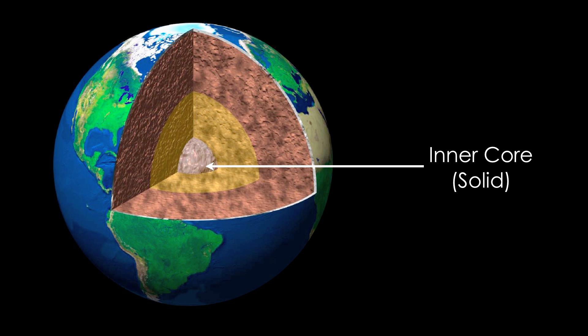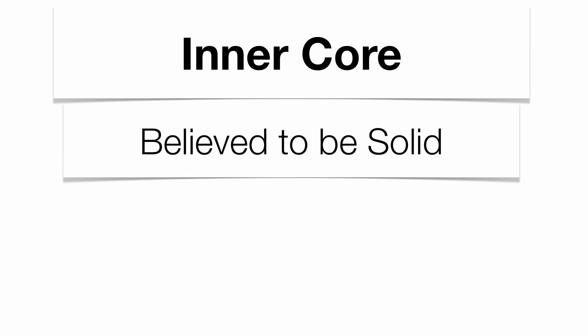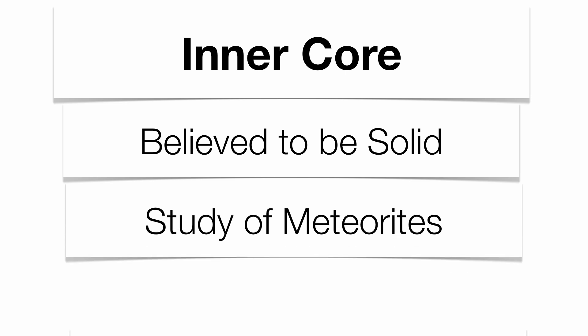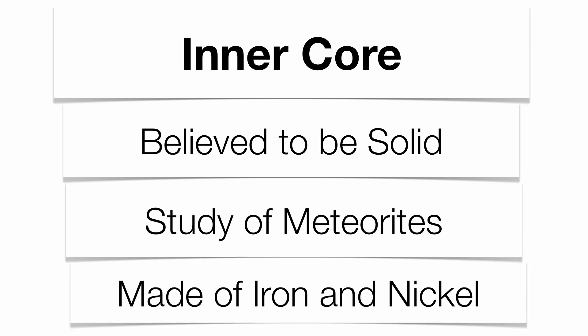Going a little bit deeper into the planet, you get to the inner core. The inner core is believed to be solid very simply because the pressure is so immense at the center of our planet that it will not allow the molecules to go from solid to liquid — it will not allow it to melt. So our inner core is strictly solid. Through the study of meteorites, we believe that instead of being liquid iron and nickel like the outer core, it's solid iron and nickel.